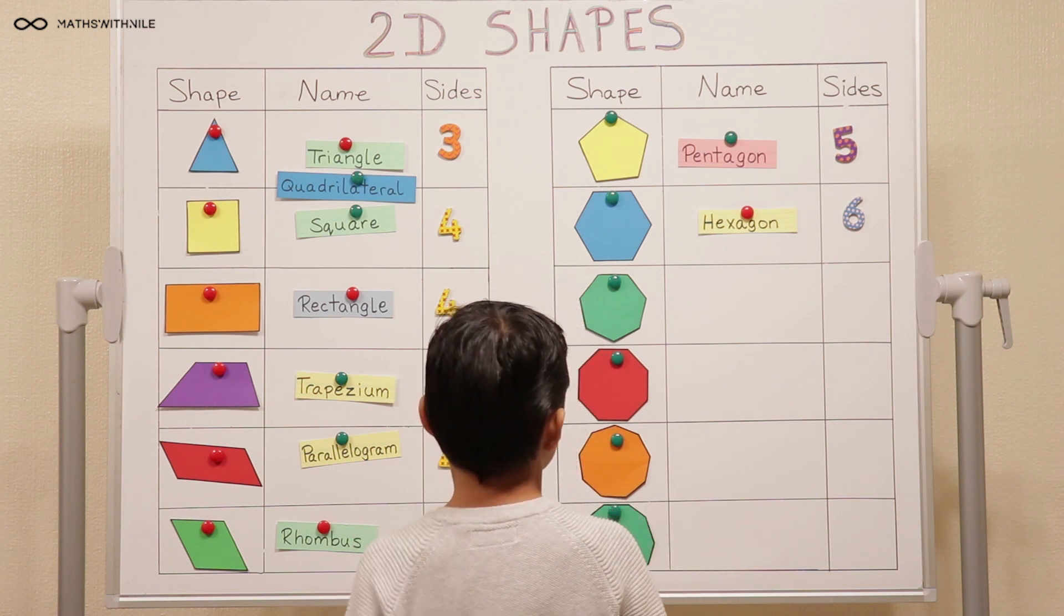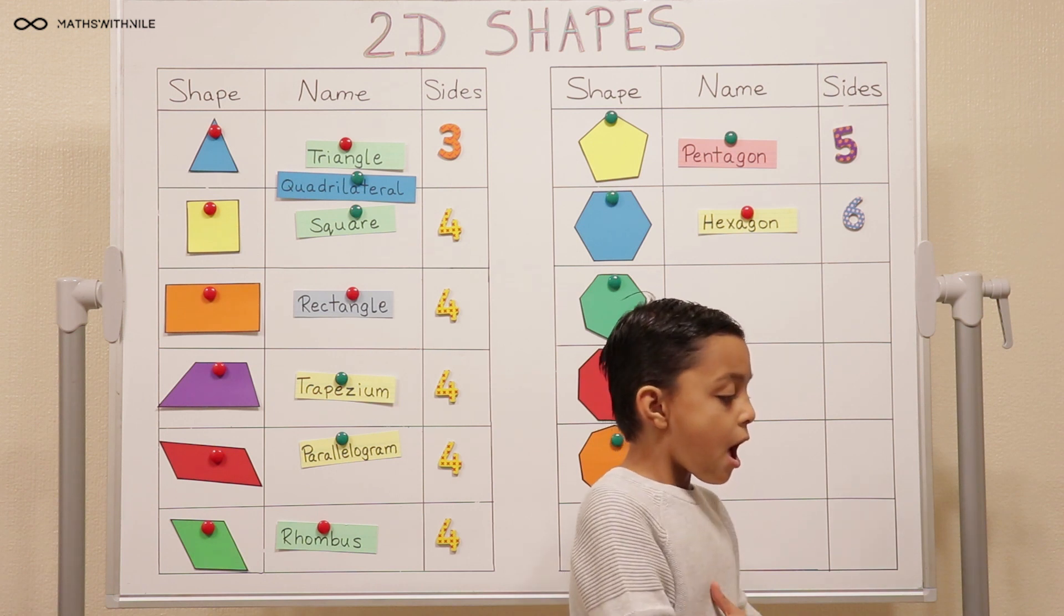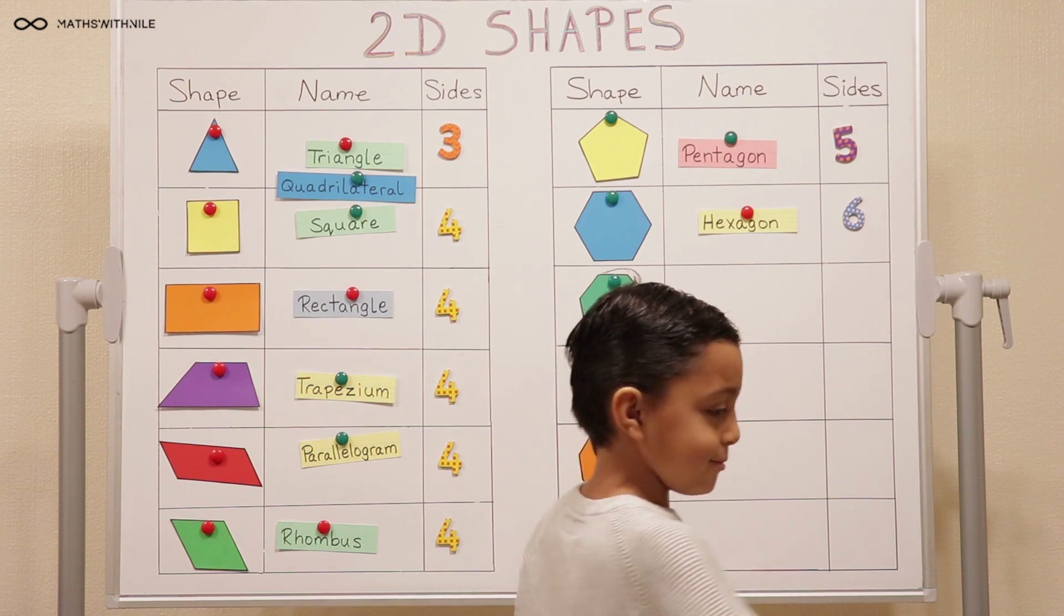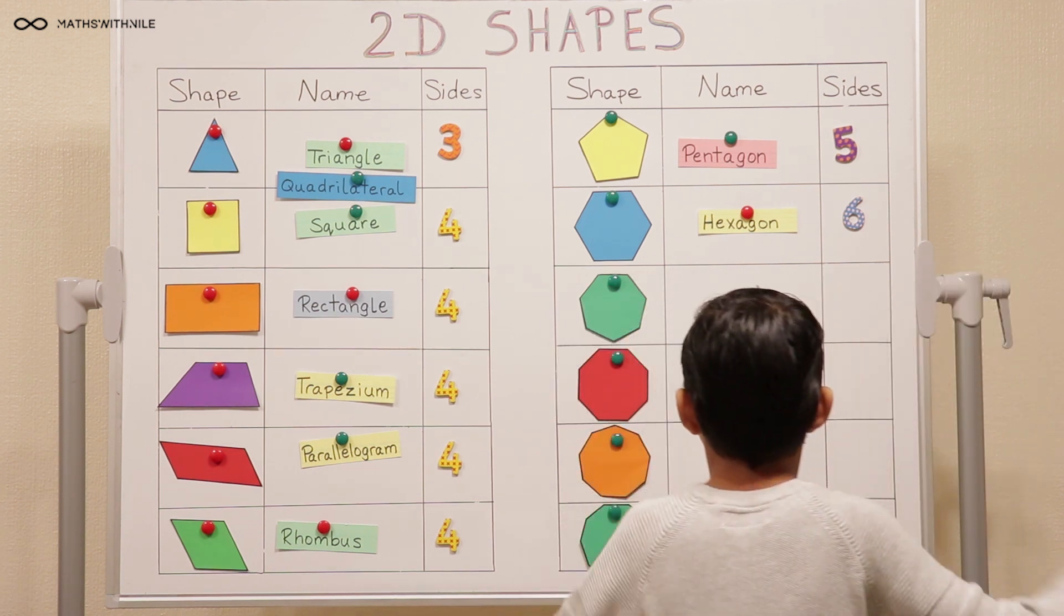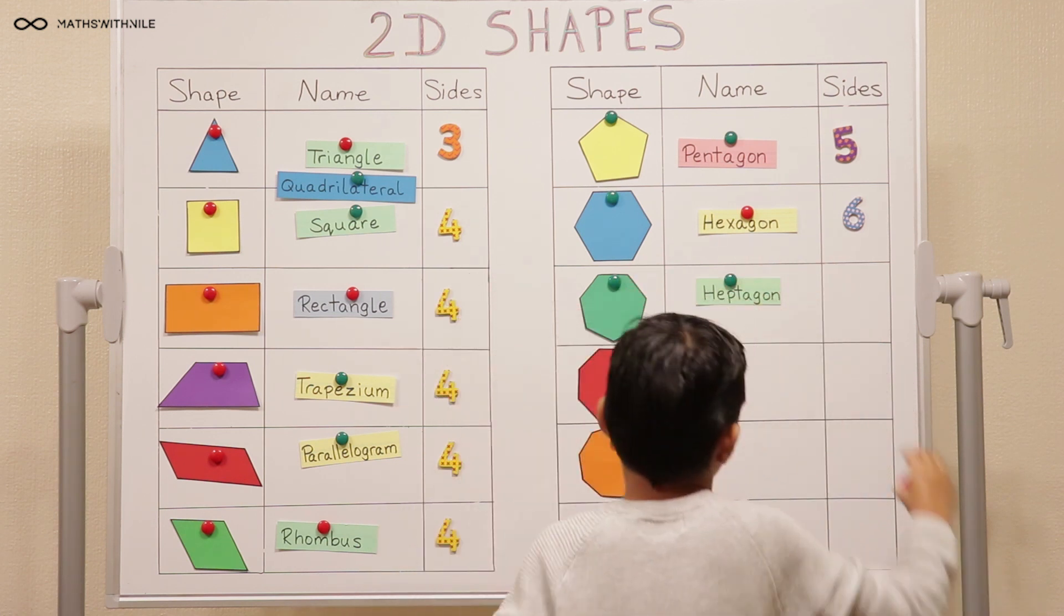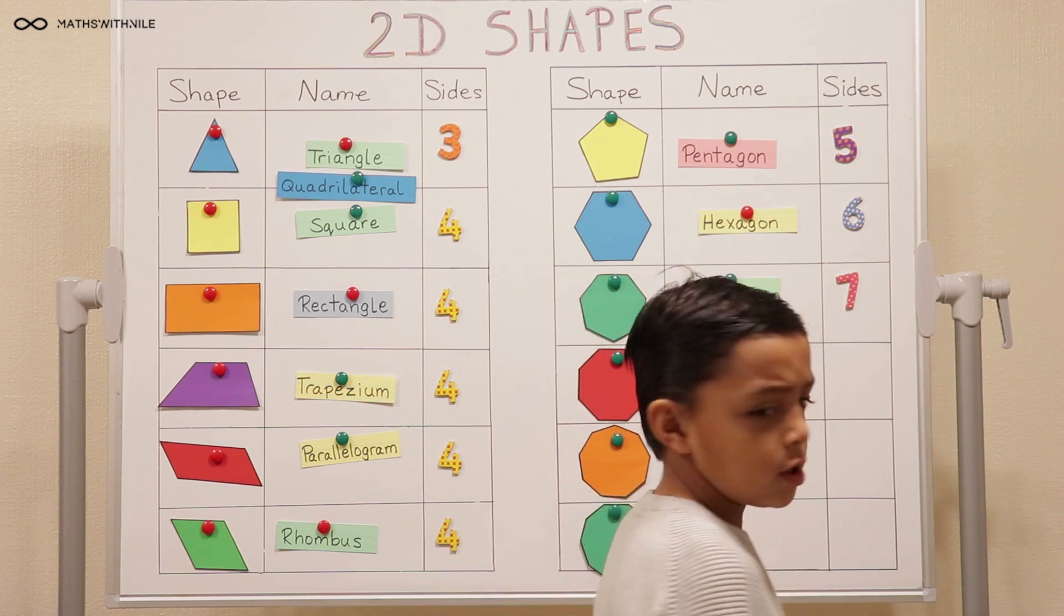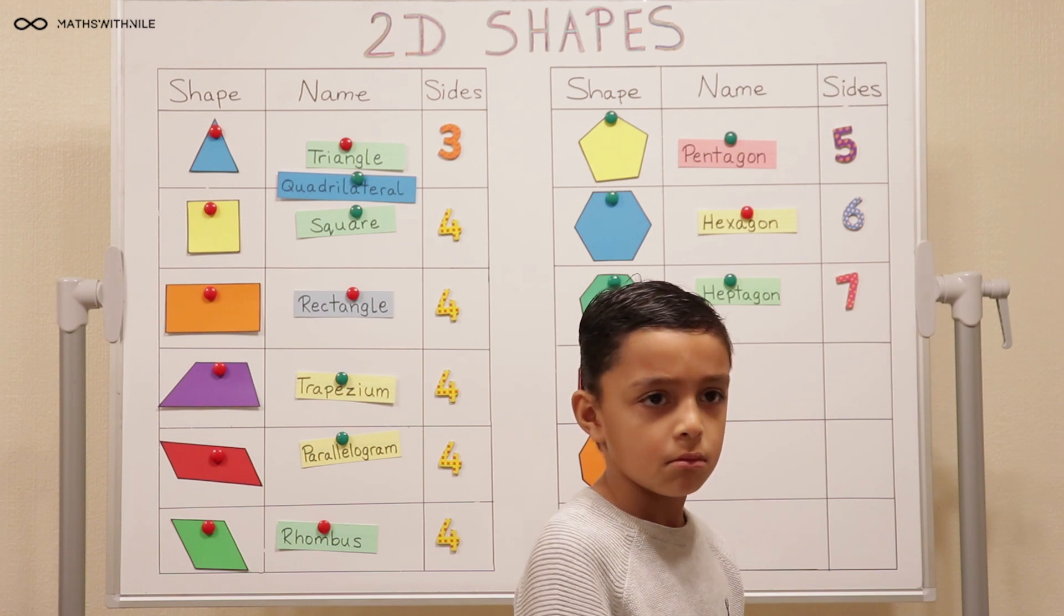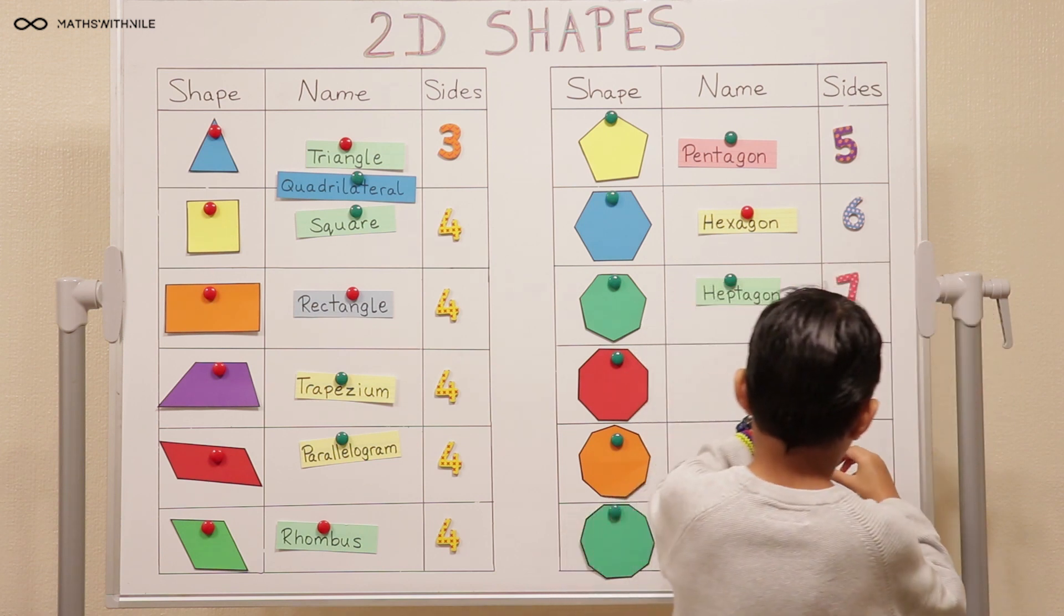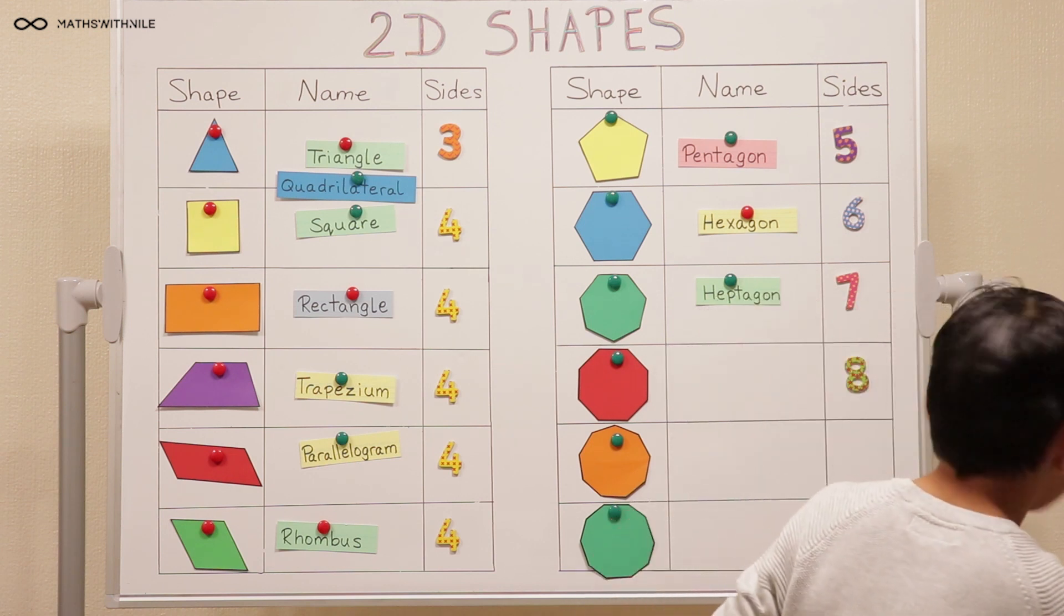Next shape. Seven sides. Heptagon. Heptagon. Good. Eight sides. We don't have enough numbers here. Don't worry, keep going. Eight. I'll put the 8 sides here and it's called an octagon. Eight sides is octagon. Very good.